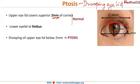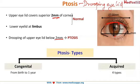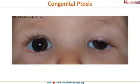The upper eyelid covers 2 mm of the superior cornea — this is the normal status. Ptosis occurs when the upper eyelid starts covering more than 2 mm of the cornea. This can be of two types: congenital, that is from birth to one year, or acquired, which is divided into four types.